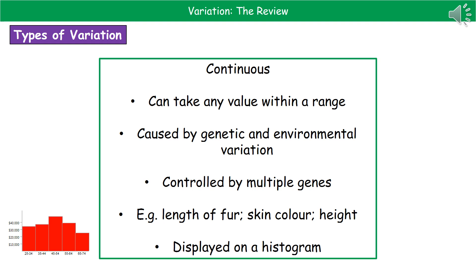One question they like to throw in, linking to maths ideas, is to ask you how you should display this information. The best type of graph to use to display continuous variation is a histogram, shown in the bottom left. The key feature — hopefully you know from your maths — is that there are no spaces between the bars.